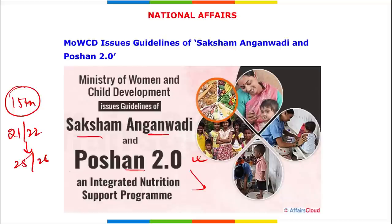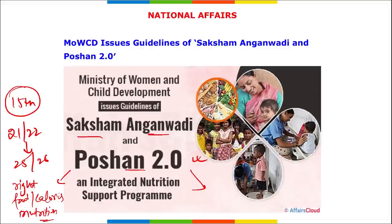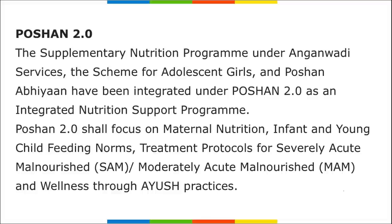POSHAN 2.0 shall focus on maternal nutrition, infant and young child feeding norms, and treatment protocols for severe acute malnutrition. Basically, POSHAN 2.0 is to provide the right amount of food, calories, and nutrition to mothers and young children. Anganwadi services are offered to all eligible beneficiaries on demand regardless of caste, religion, and income — the only requirement is registration at the nearest Anganwadi center with Aadhaar identification.